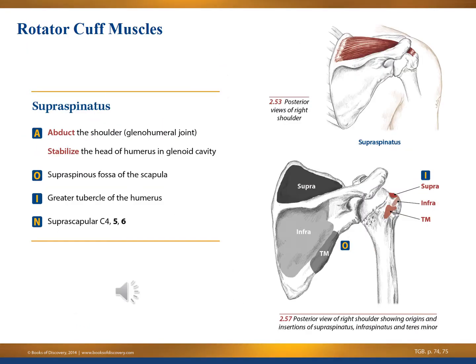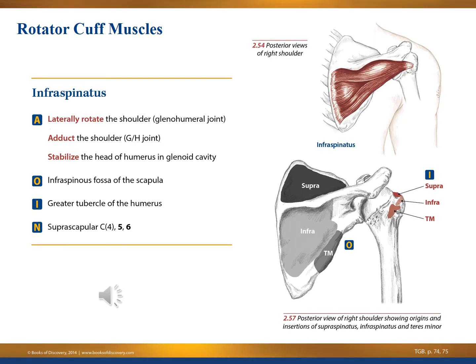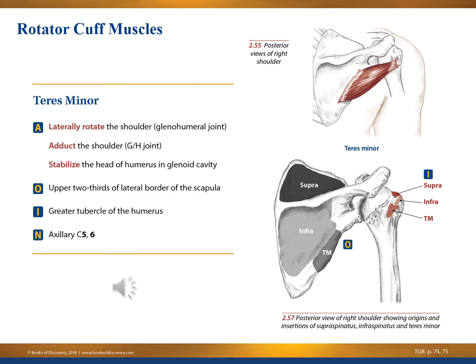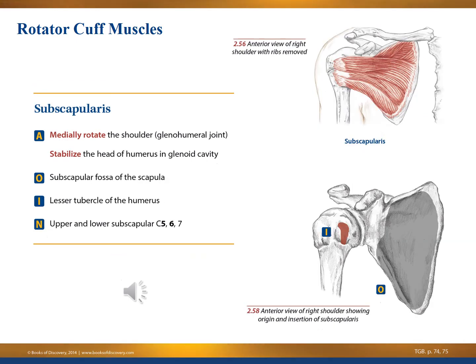SITS is an acronym representing the rotator cuff muscles: Supraspinatus, Infraspinatus, Teres minor, and Subscapularis. The supraspinatus gets us started. The infraspinatus is one of the favorites. Teres minor makes up the T of SITS and is a lovely muscle to work with clients. The subscapularis — the final SITS muscle — is a little difficult to work on a person but is lovely for reducing shoulder tension.